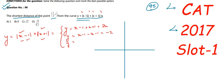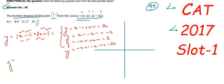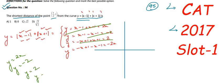Our third equation: when the first term is negative and the second is positive, y = -(x - 1) + (x + 1) = 2. Fourth equation: when both are negative, y = -(x - 1) - (x + 1) = -2x. So our four values of y are: y = 2x, y = -2, y = 2, and y = -2x.